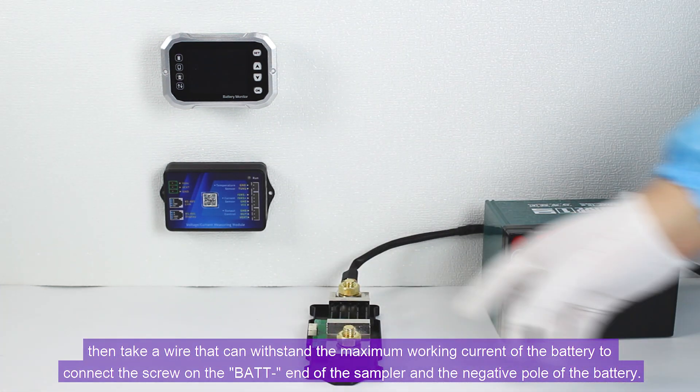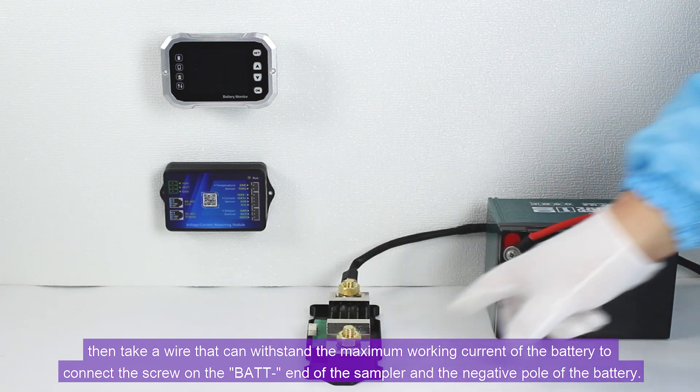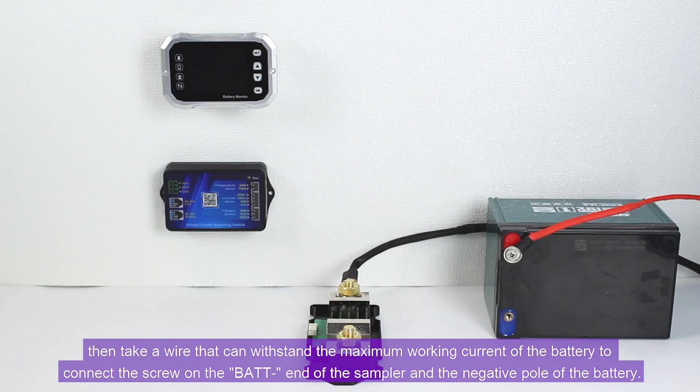Then take a wire that can withstand the maximum working current of the battery to connect the screw on the bat end of the sampler and the negative pole of the battery.